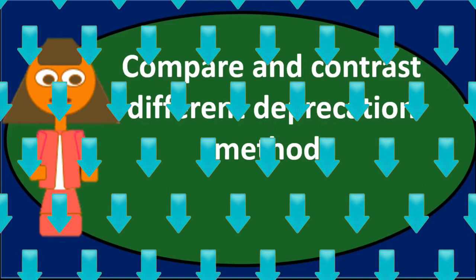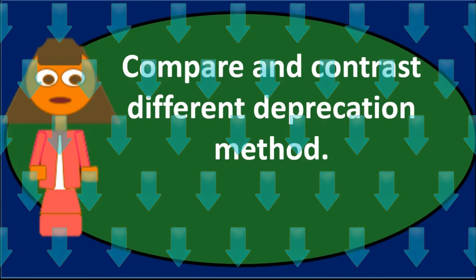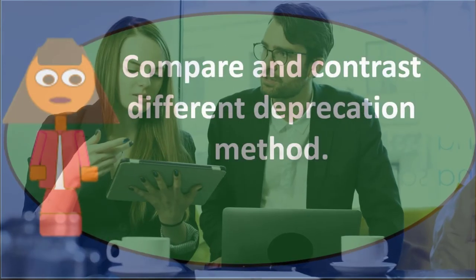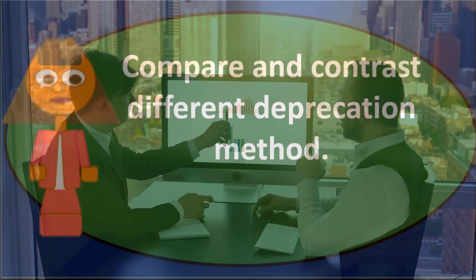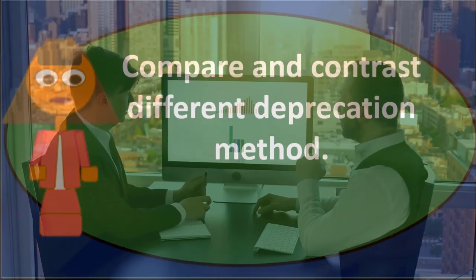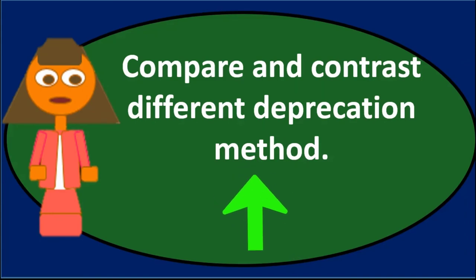And that's kind of the downfall of using this method. It's probably more accurate, but we have to track the miles. We have to first know how many miles we think the car is going to go. Then we have to track the miles per period. And then we have to take our mileage rate times the number of miles that happened during that time period, that giving us the depreciation.